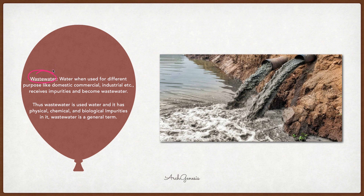We need to know some terminologies. First is wastewater — what do you mean by wastewater? When water is used for different purposes like domestic, commercial, or industrial activities, it receives impurities and becomes wastewater. For example, washing vegetables at home, or industrial cleaning — the fresh water we use becomes wastewater after use.